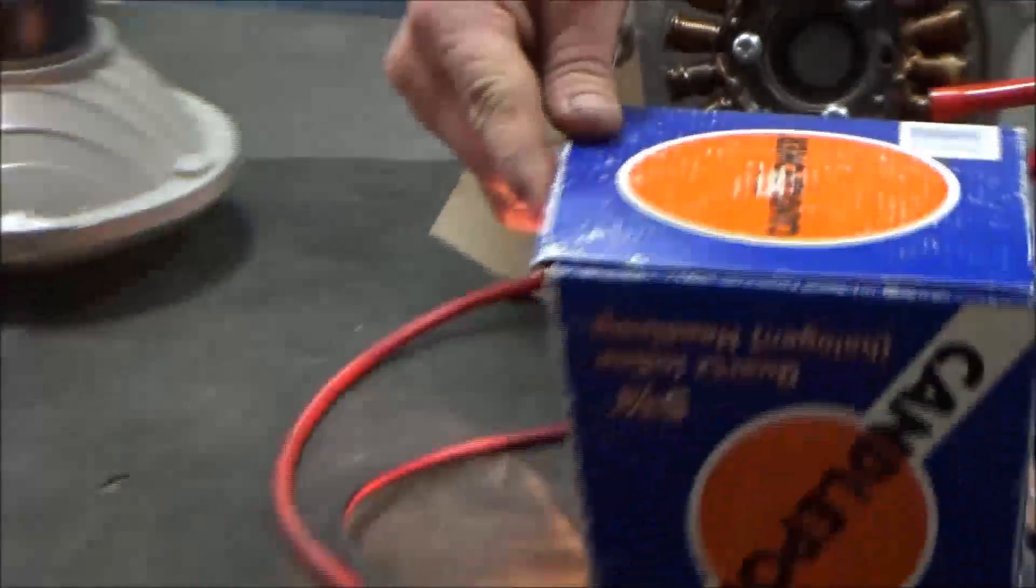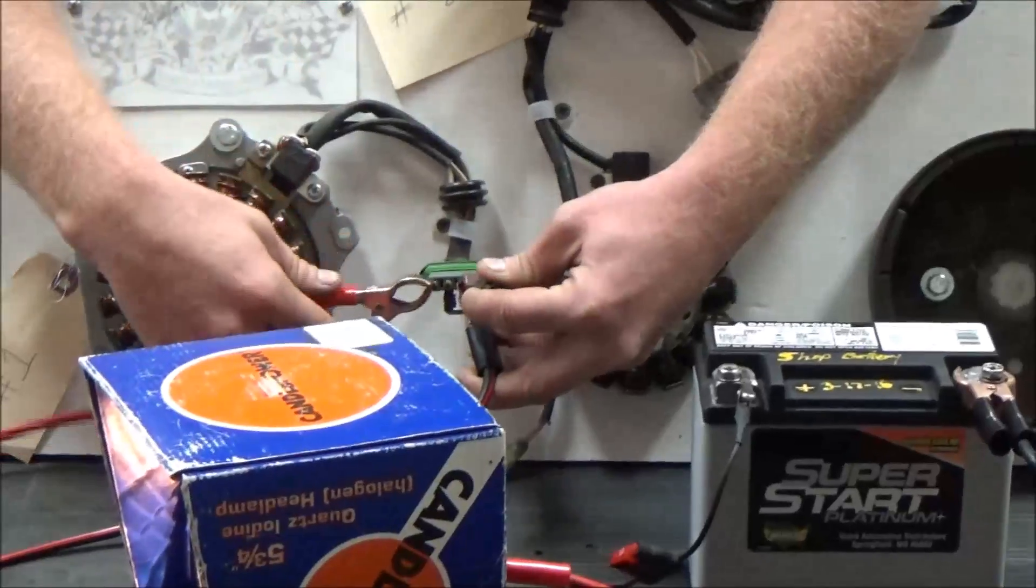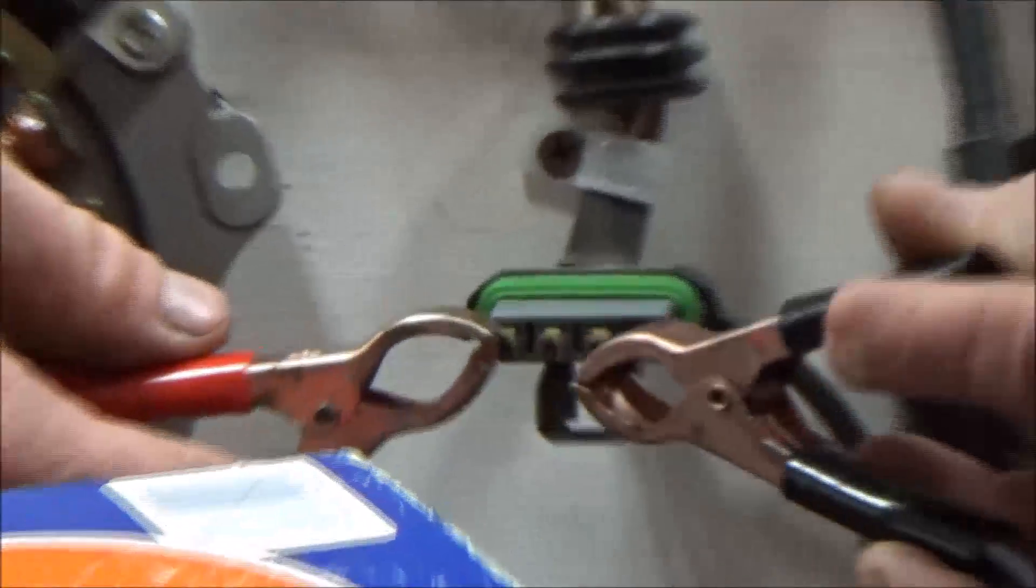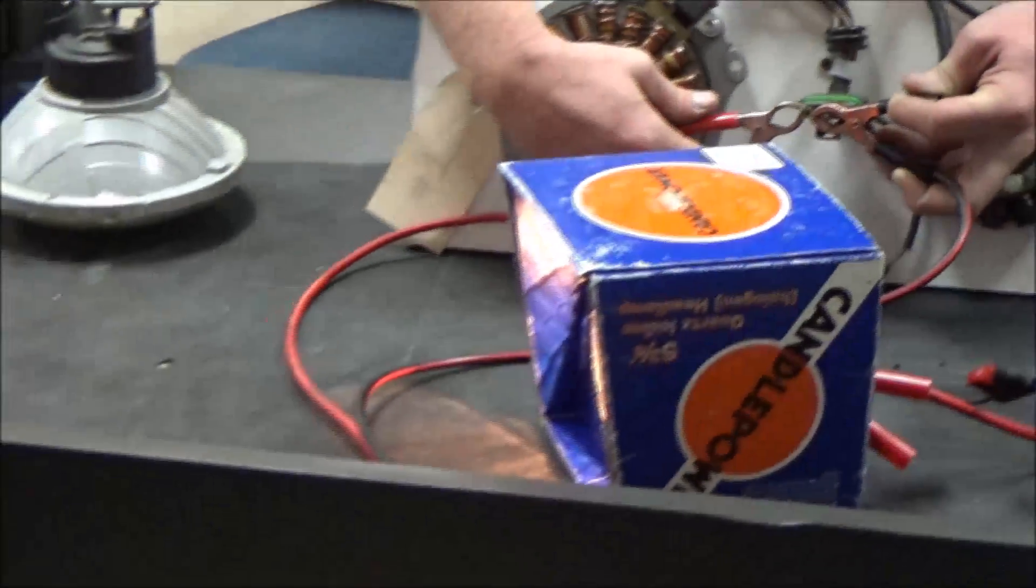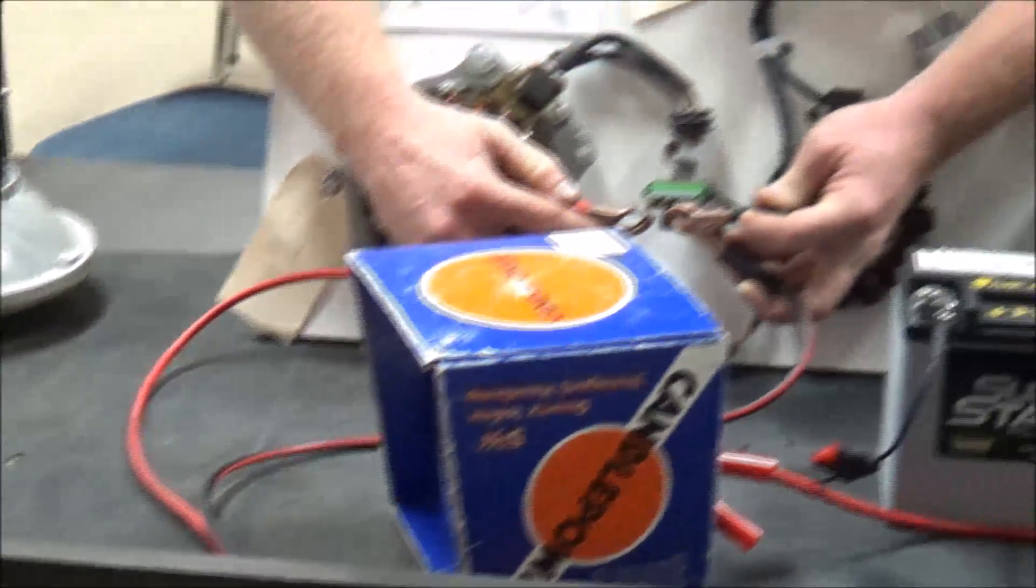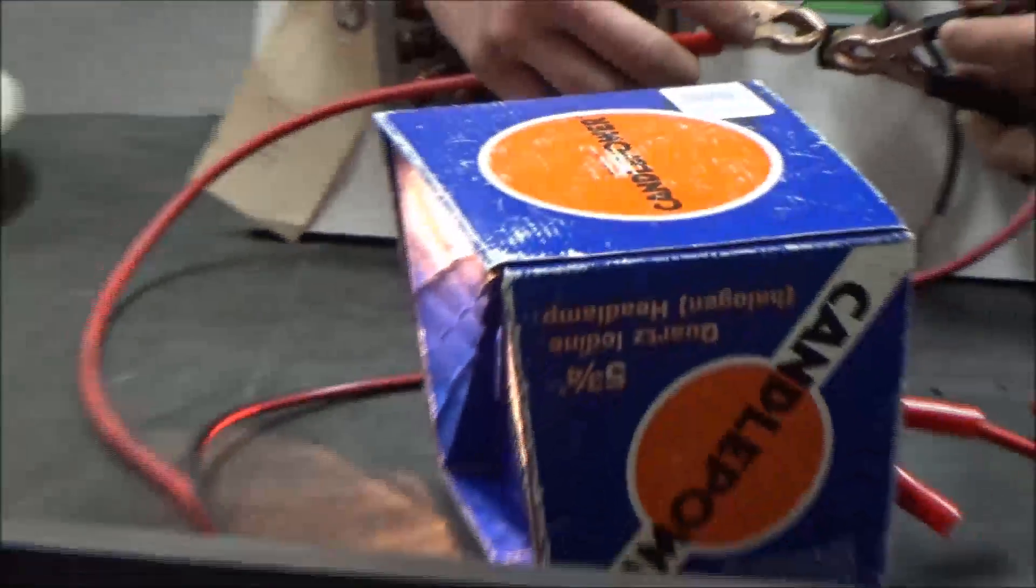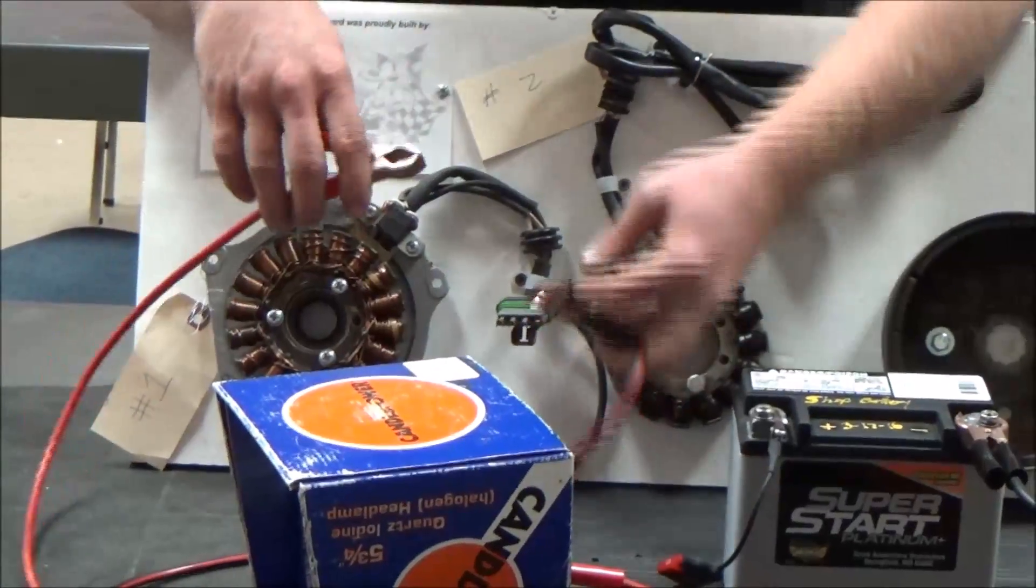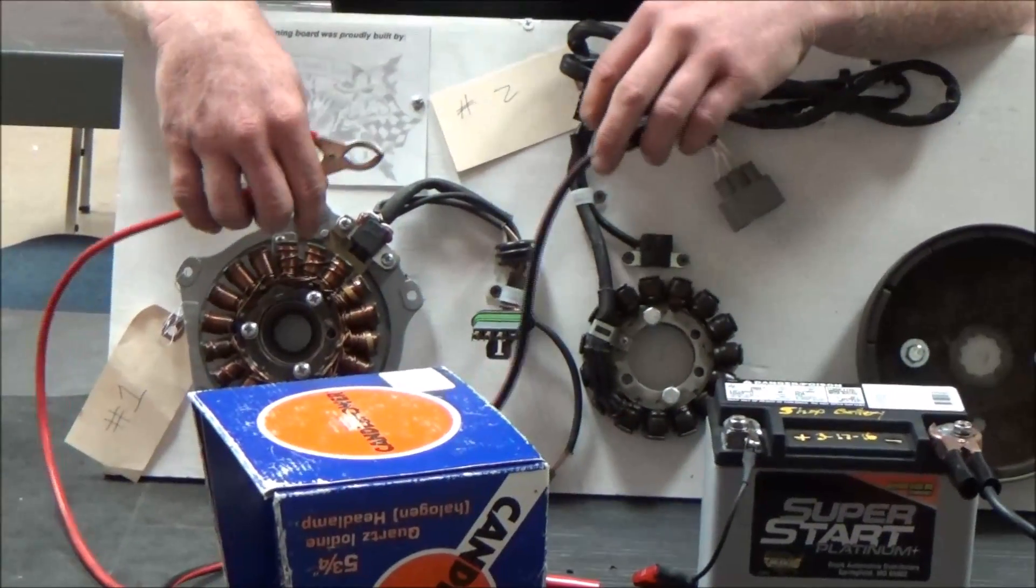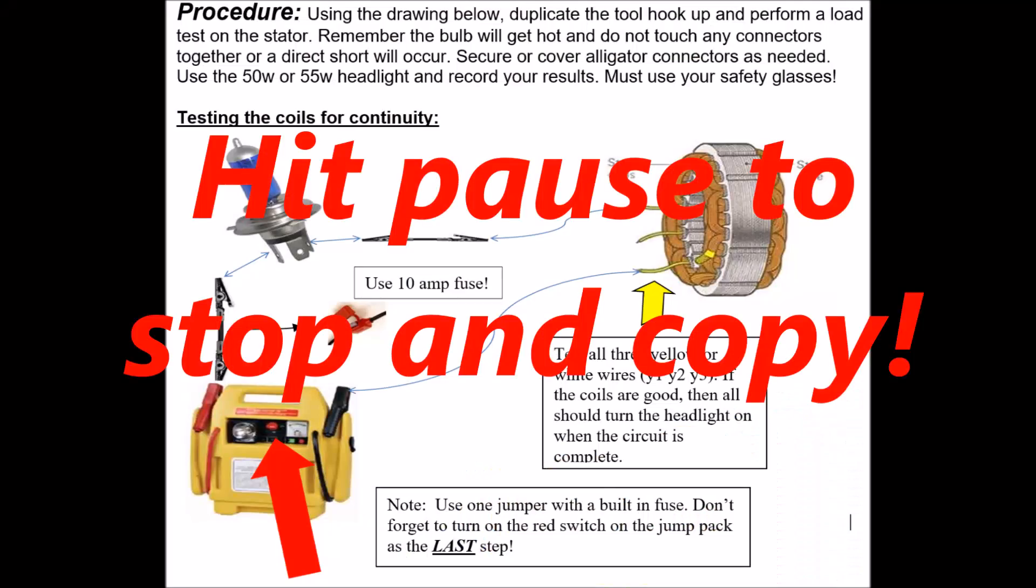As you can see the light has come on, so we know that those two coils and wave are fine. And if we move over and do coils A and B once again, and then our third test would be going from B to C, and we still have that. So we know that all three of the coils are fine and the internal integrity of the insulation on the inside of the stator is fine.